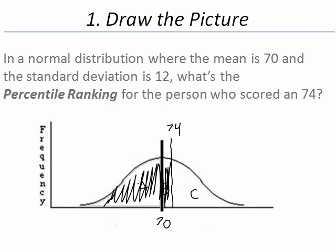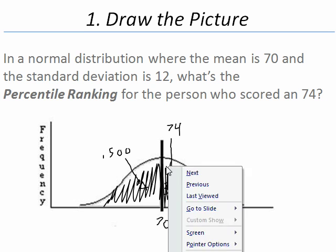So the proportion of the population below the mean, below 70, is 0.500. To solve this problem we are going to need to determine the proportion of the population between the mean of 70 and the value of 74.